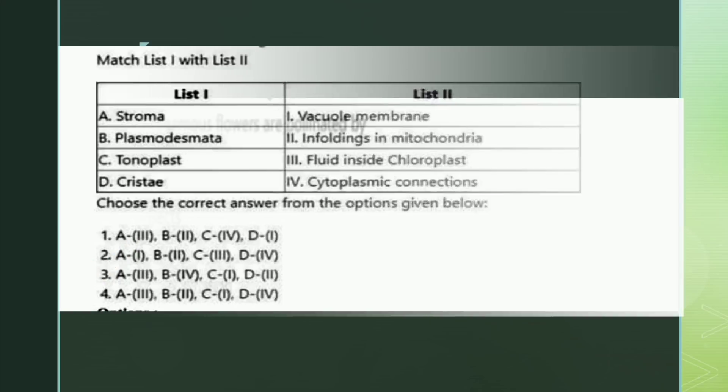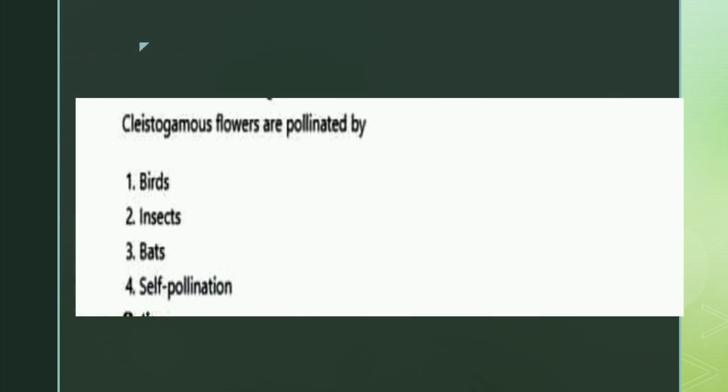The next question: cleistogamous flowers are pollinated by what? The options are birds, insects, bats, or self-pollination. The right answer is option four: self-pollination.